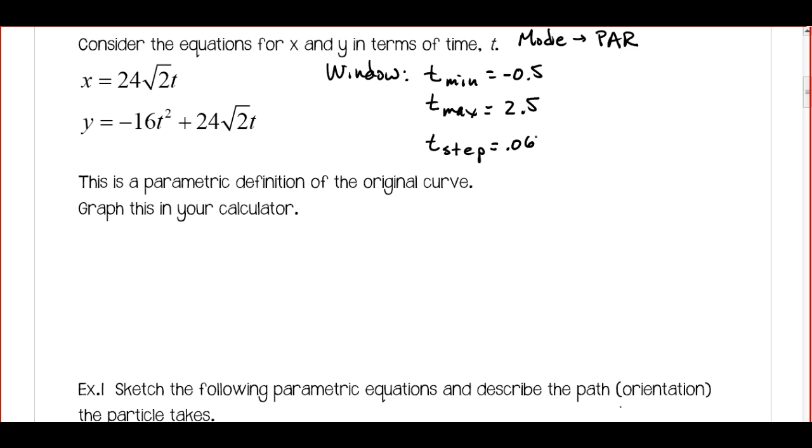And when we look at some of the other examples, we're going to actually look at a chart of values for t, x, and y. But for now, we're just going to graph this in the equation. So here's what we want tmin, tmax, and tstep to be.